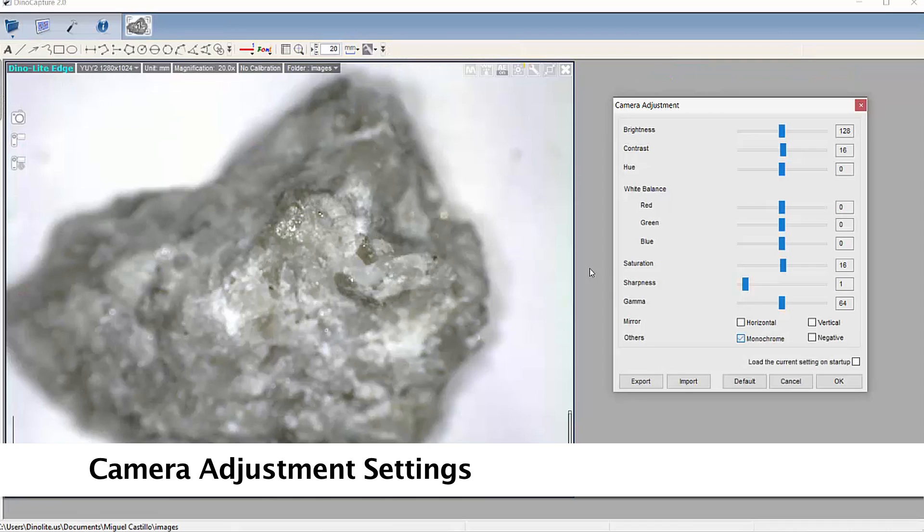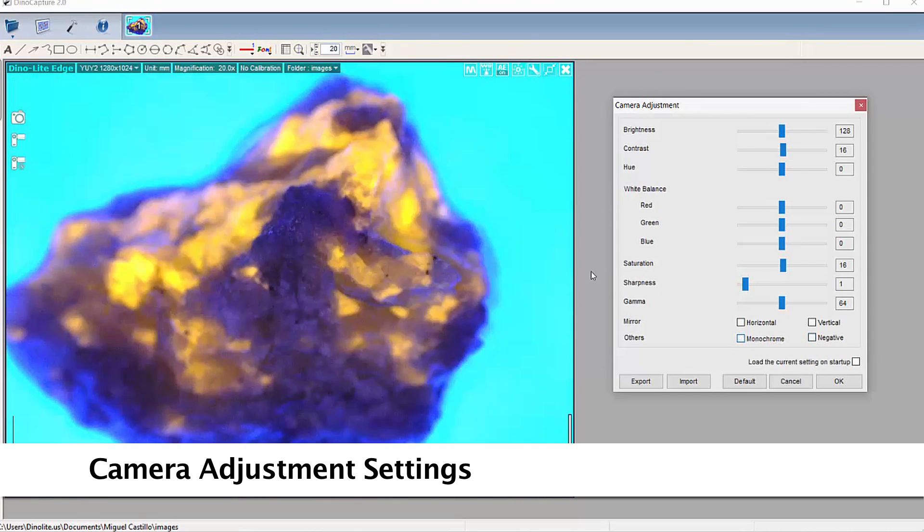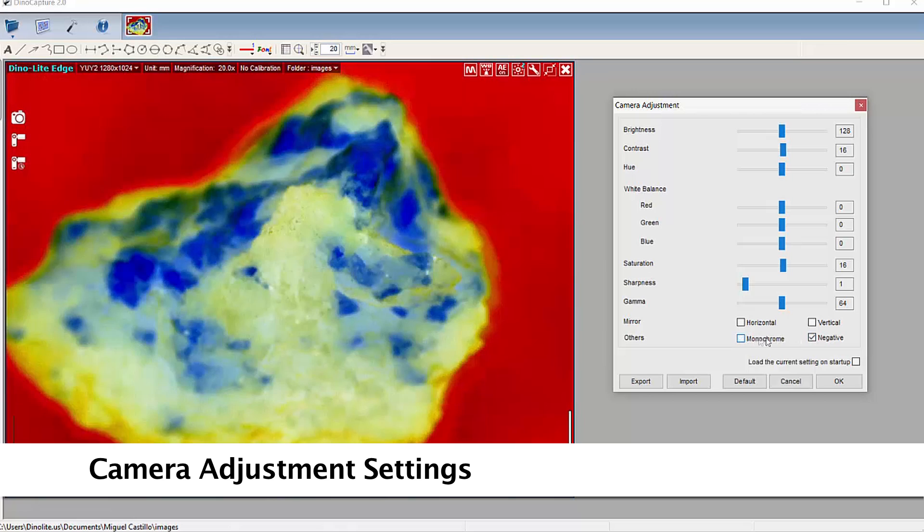Some adjustable camera options include white balance, brightness, contrast, hue, as well as negative and monochrome modes and more.